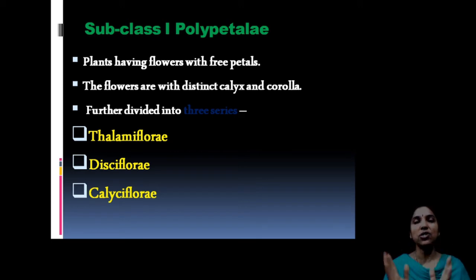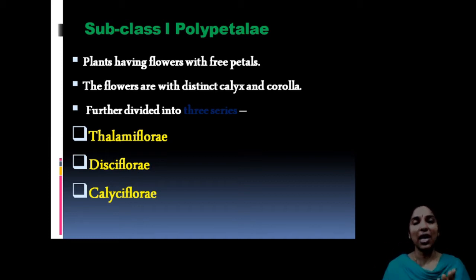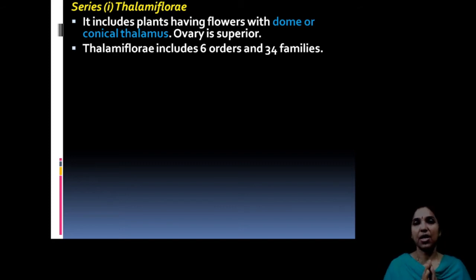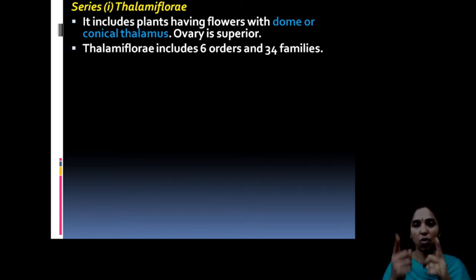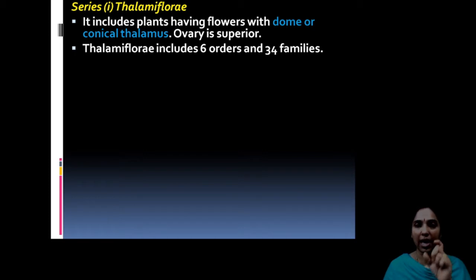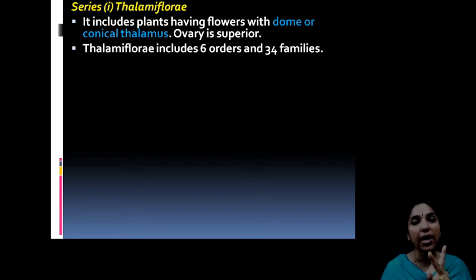All floral parts are arranged on a structure known as the thalamus or receptacle. In Thalamiflorae, the thalamus is corn-shaped or dome-shaped. The ovary is superior, with corolla, calyx, and androecium arising below. Thalamiflorae is divided into six orders and thirty-four families.